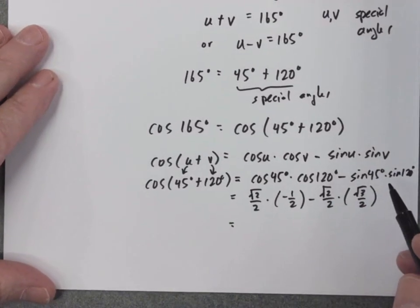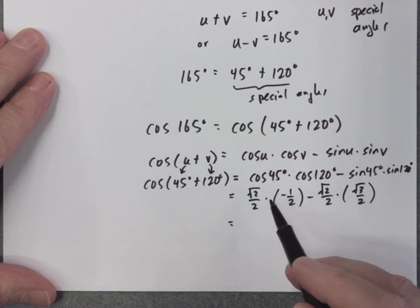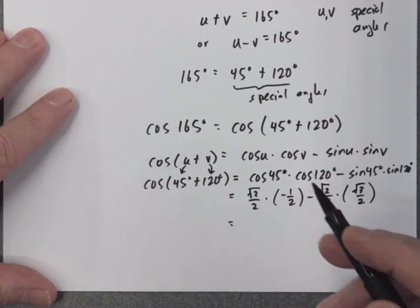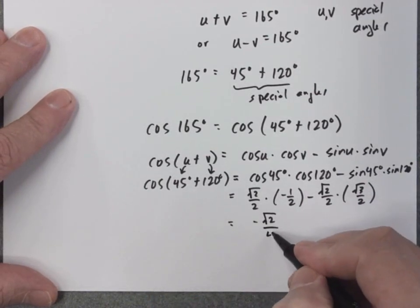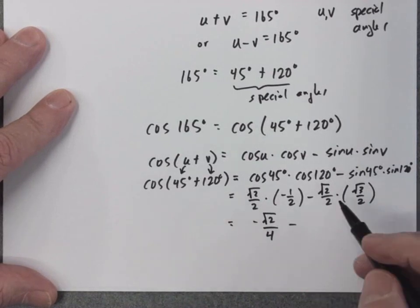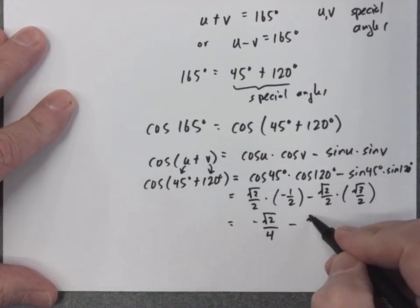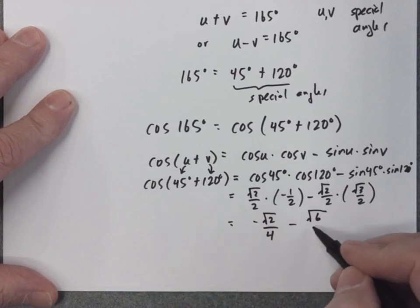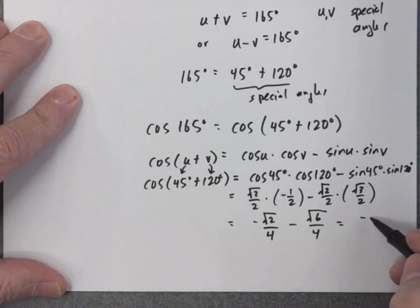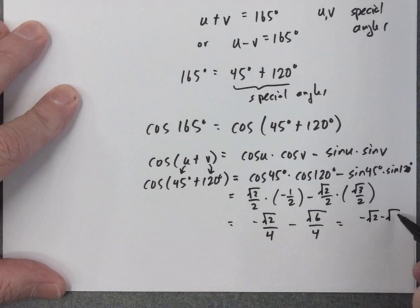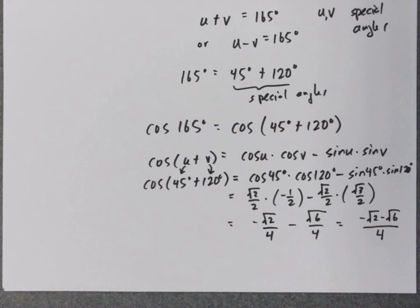Now we do a little math with fractions and square roots. Multiplying gives negative square root of 2 over 4, minus square root of 2 times square root of 3 which is square root of 6 over 4. Since I have a common denominator I can combine into one fraction, and checking the answer key, that is the correct answer.